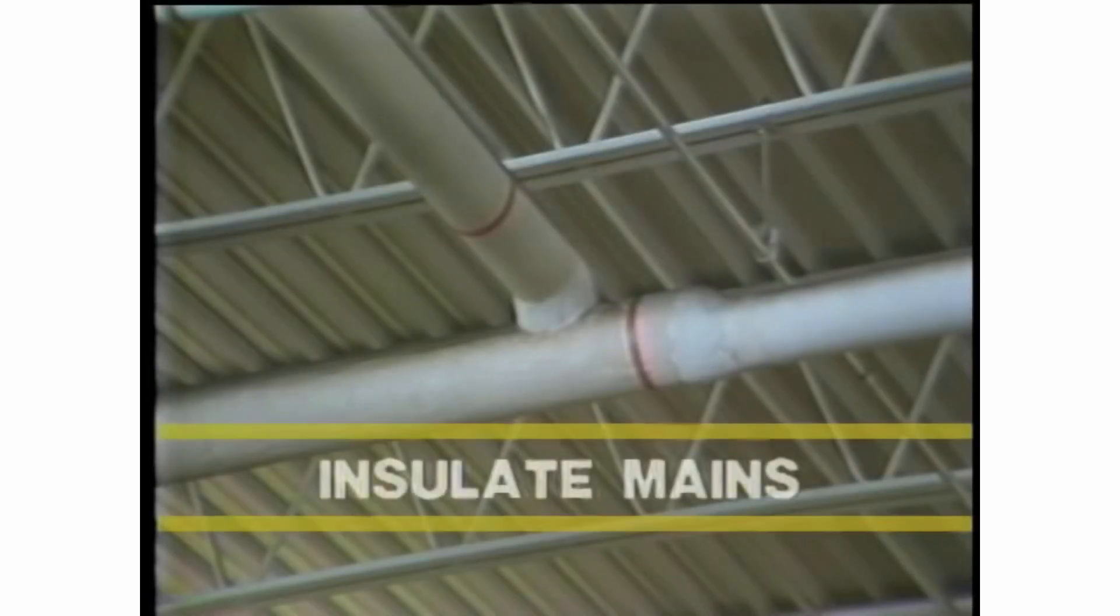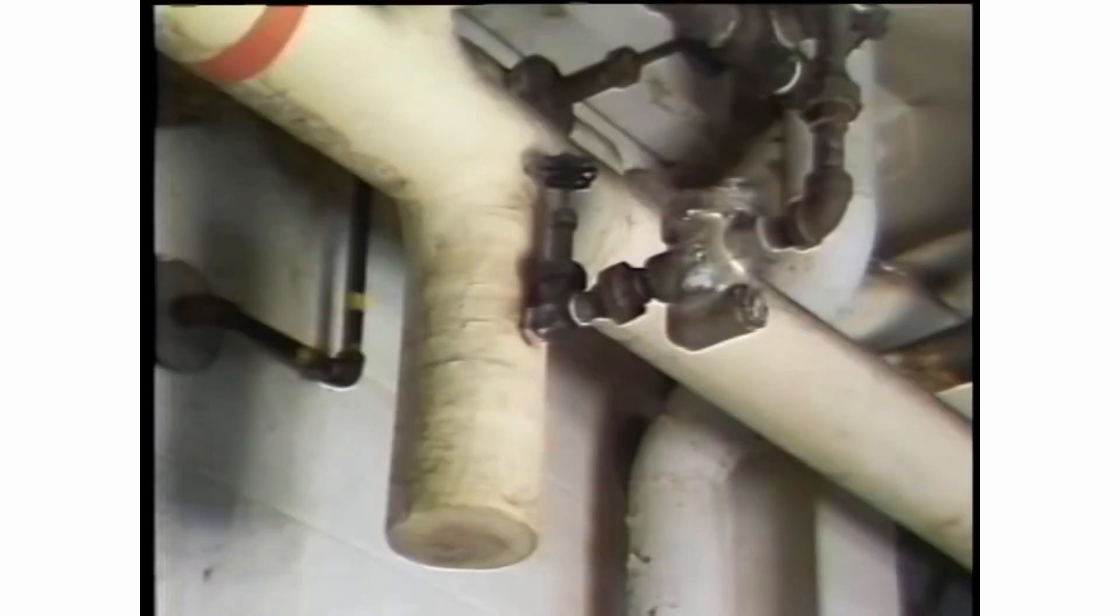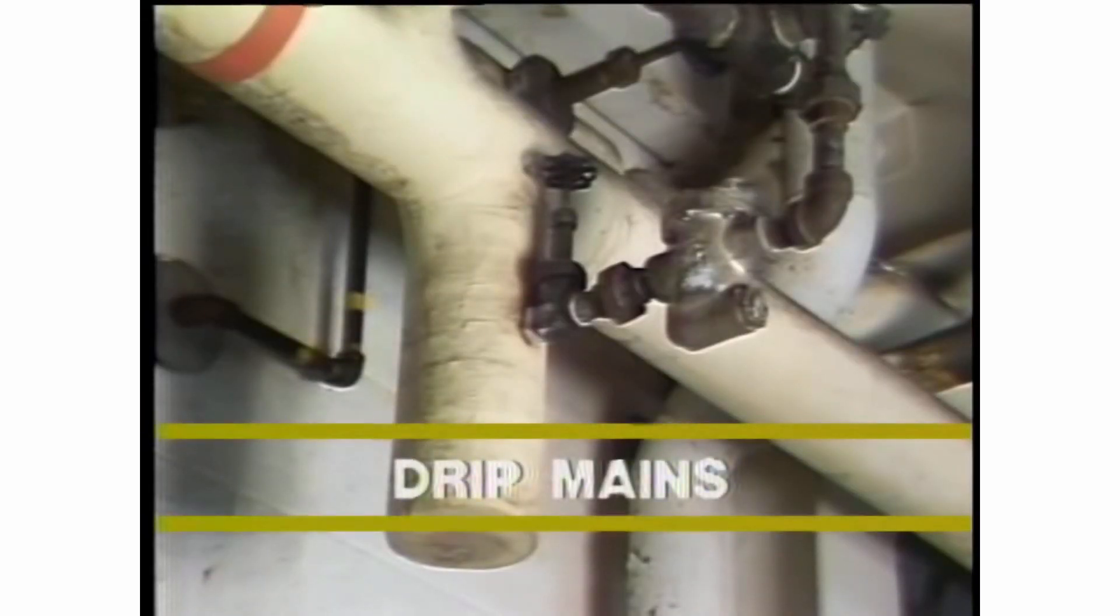Steam mains must be insulated to minimize wasteful heat loss. But even in well insulated steam mains, there will be some condensing taking place. Drip legs and drip traps must be installed to automatically drain the mains of this condensate.